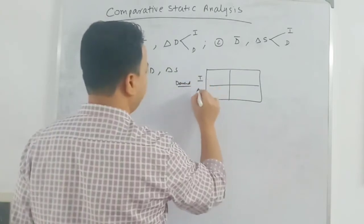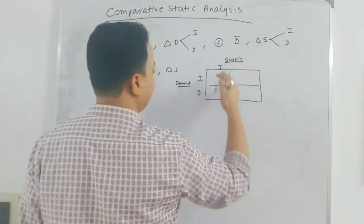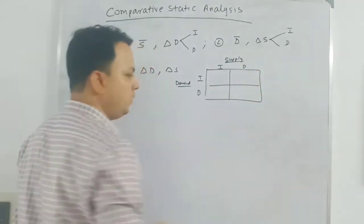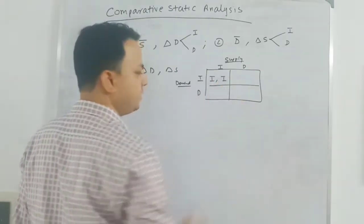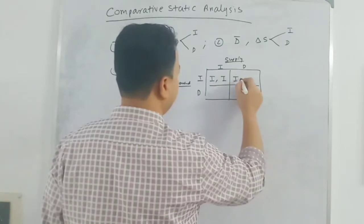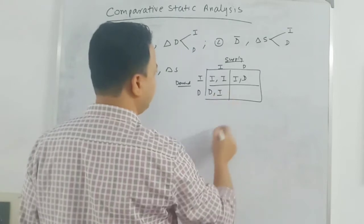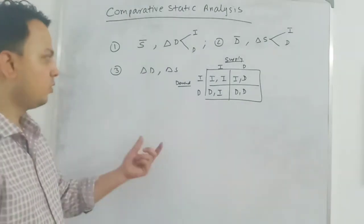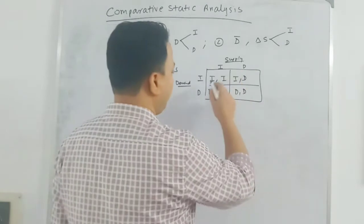When both demand and supply change together, demand can increase or decrease, and supply can also increase or decrease, giving us four possibilities: demand increasing and supply increasing; demand increasing and supply decreasing; demand decreasing and supply increasing; and both decreasing.